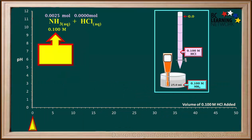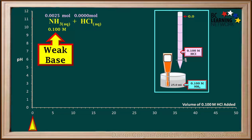We'll start with the 0.1 molar NH3 solution in the beaker — no HCl acid has been added yet. NH3 is a weak base, so the initial pH will be above 7. It can be determined that the pH of 0.1 molar NH3 is equal to 11.12. This is where the curve starts.